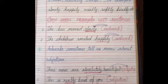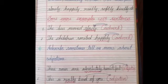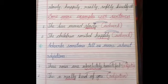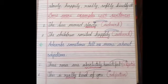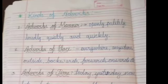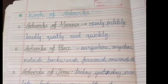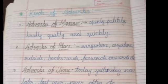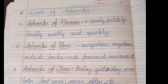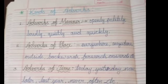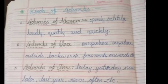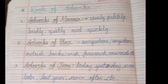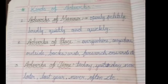Adverbs sometimes also tell more about adjectives. For example: 'These roses are absolutely beautiful.' Beautiful is the adjective, but 'absolutely' tells how beautiful — so absolutely is an adverb. Another example: 'This is really kind of you.' Kind is the adjective, and 'really' describes what kind of kind — so really is an adverb.